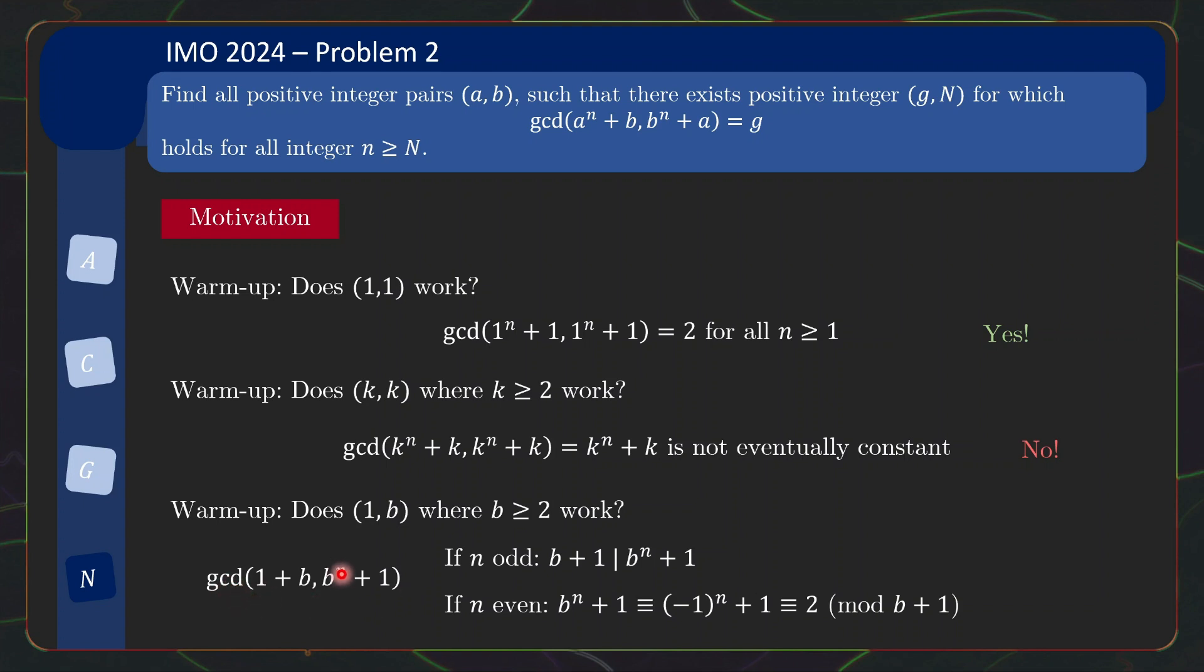So if you look at the gcd value as n changes, you have b + 1, not b + 1, b + 1, not b + 1 and so on. So it is definitely not eventually constant. So the answer is no.